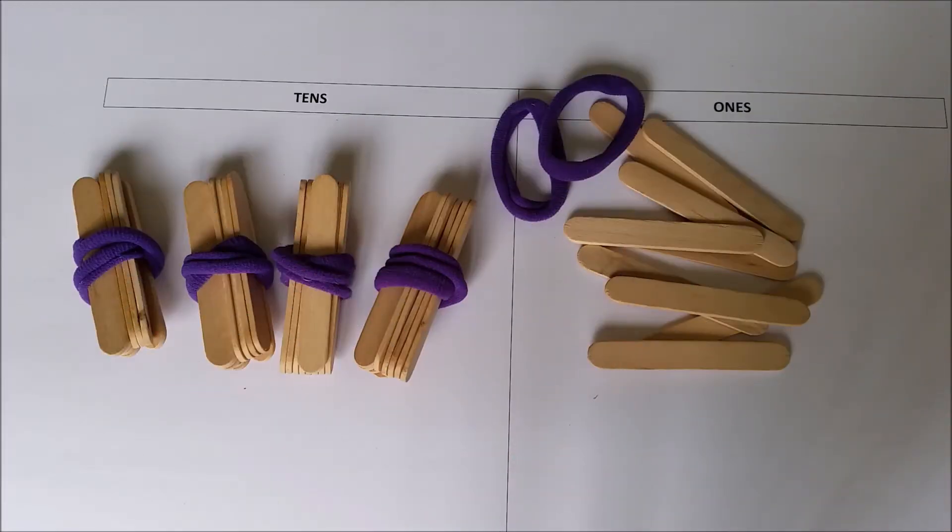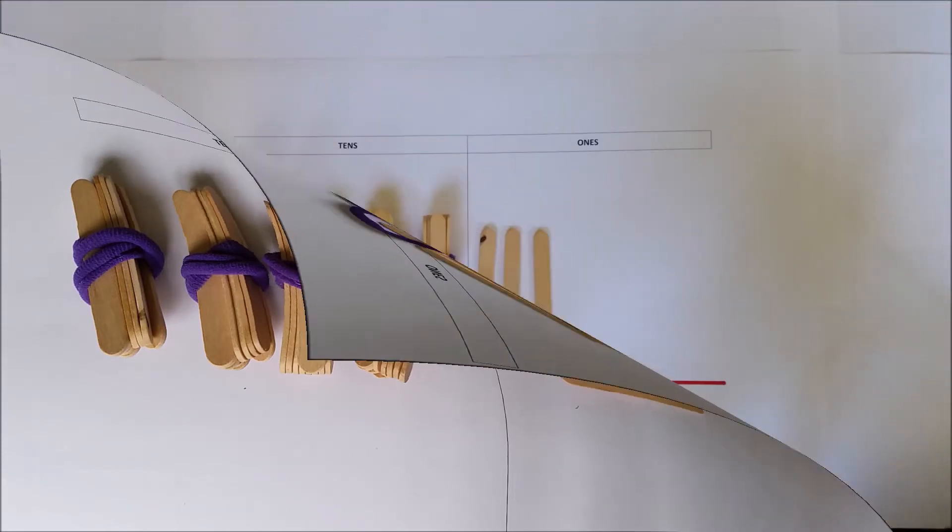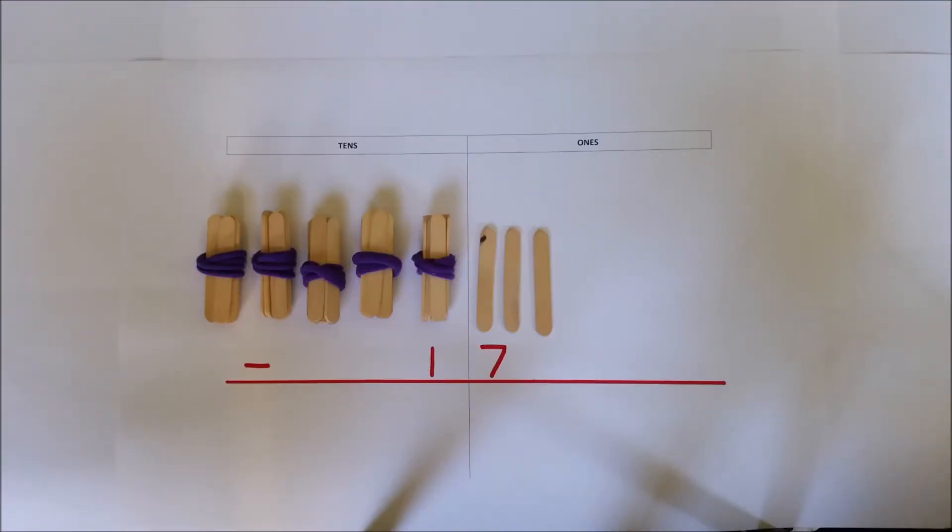Subtraction from a two digit number is best introduced using materials such as popsicle sticks and a place value chart. This is the decomposition method for subtraction with an emphasis on place value. I'm going to solve 53 take away 17.